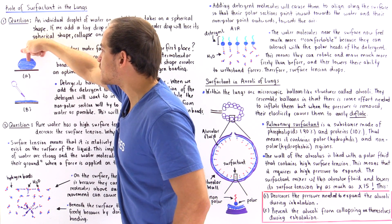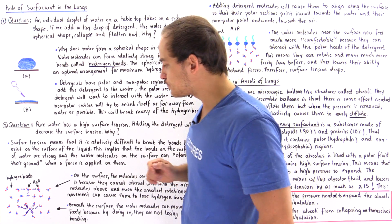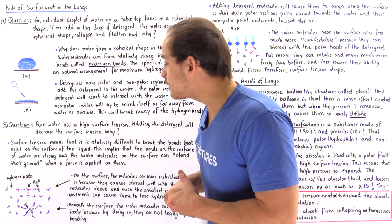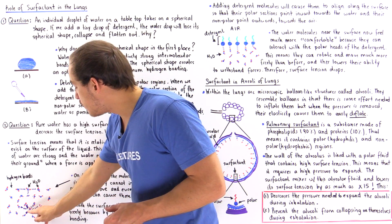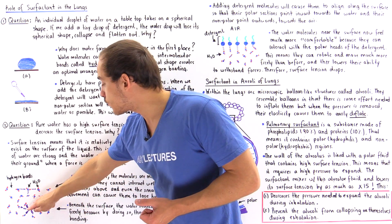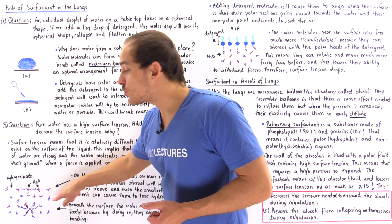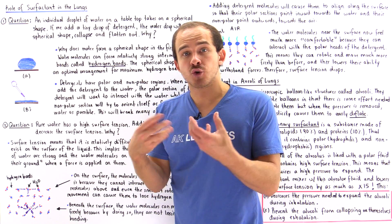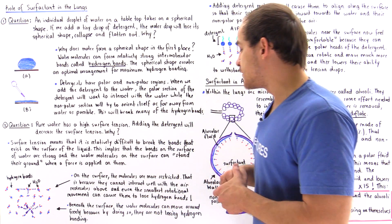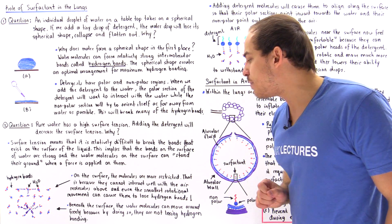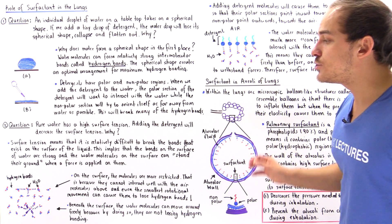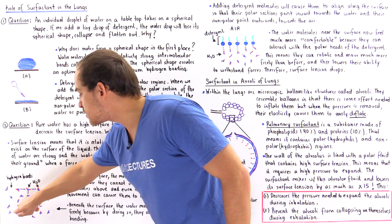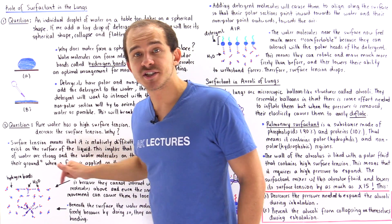If we zoom in on the surface of the water in diagram A, let's compare the water molecules found deep inside the droplet versus those on the surface. Deep inside our water droplet, molecules can easily move around, because no matter where they are within the droplet, they are always surrounded by a cage of other water molecules that creates intermolecular bonds. So beneath the surface, the molecules can move around freely because by doing so they are not losing any hydrogen bonds. In this location, a water molecule creates six of these bonds, and when it moves somewhere else it will create those same six bonds because it is always surrounded by water.